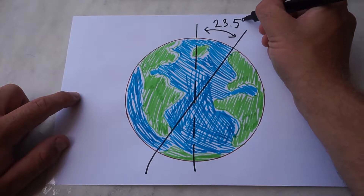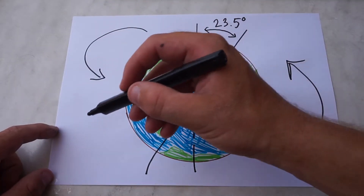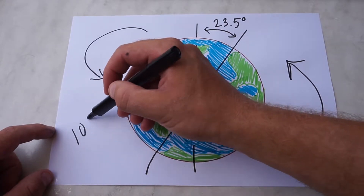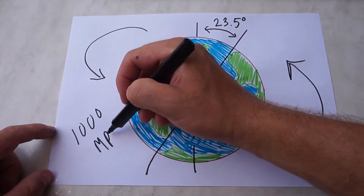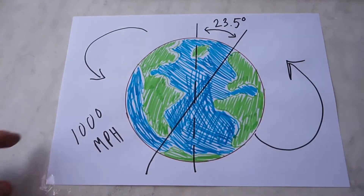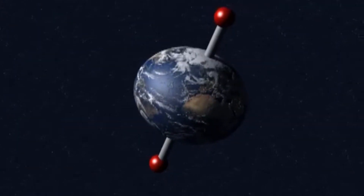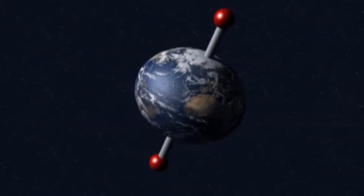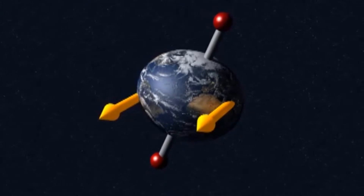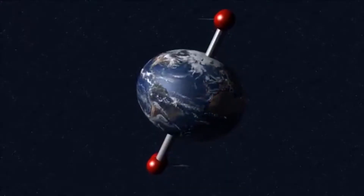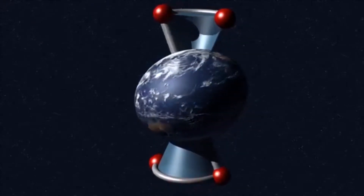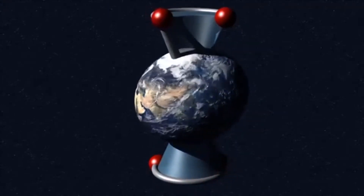So, what is precession? The Earth is tilted on its axis at 23.5 degrees and is spinning around at a thousand miles per hour, and moving around the sun. The gravitational forces of the moon and sun apply torque to the Earth to make it bulge at the equator. If you imagine a spinning top — when it starts to wobble, it starts to spin around in a large circular motion. The Earth does the same thing when the axis of rotation itself spins.